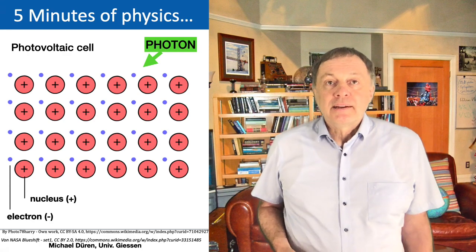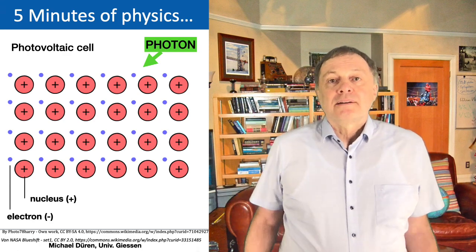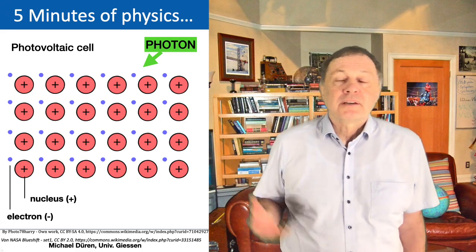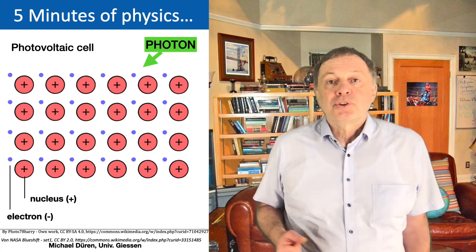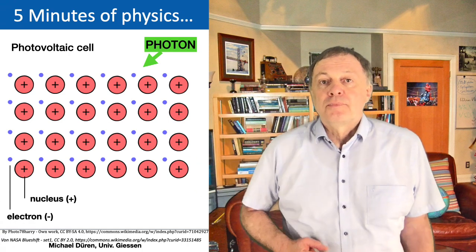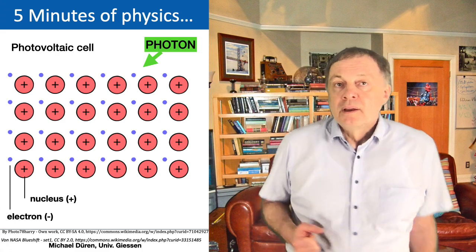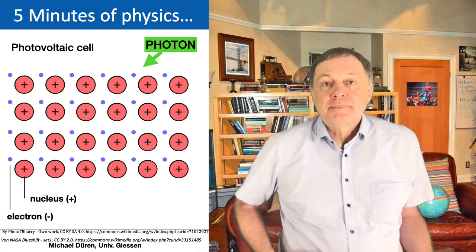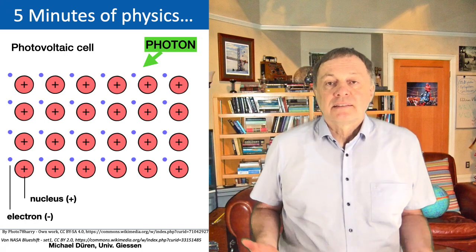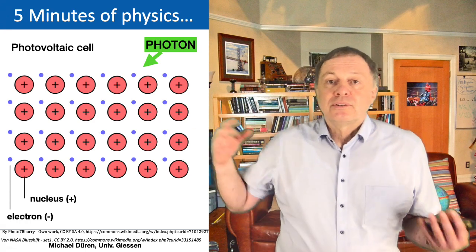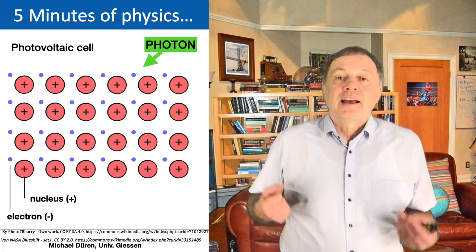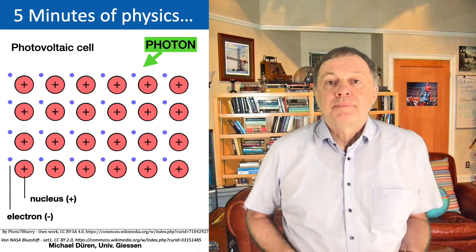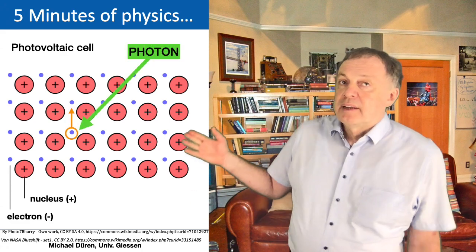If now a photon is coming in, it goes through part of the material — the material has to be more or less transparent for photons, but not really, because the photon should be absorbed in the material after some micrometers, for example. What happens? When a photon is absorbed by an atom, the electron is excited. The energy of the photon goes over to the electron and then the electron can be freed from the nucleus and possibly gains some kinetic energy.